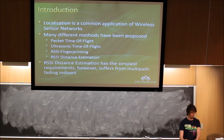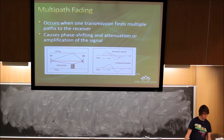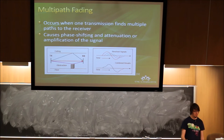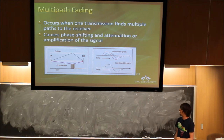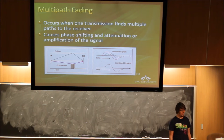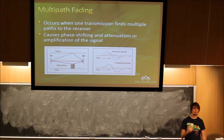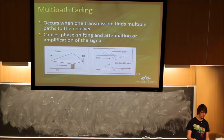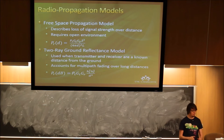However, RSSI distance estimation suffers greatly from multipath fading in indoor environments. Multipath fading occurs when a transmission finds multiple paths to the same receiver. As you see in this figure, if you have a hallway or something, the signal will bounce off the walls if they're reflective enough and come back to the receiver at the same time, causing either a sudden increase or decrease in signal and a phase shift — though phase shift has no real effect on distance estimation from RSSI alone.